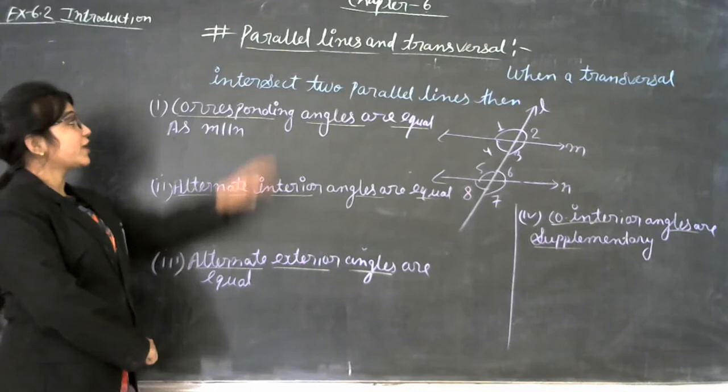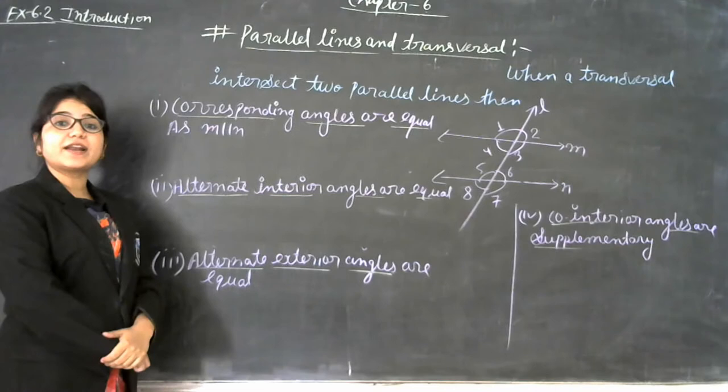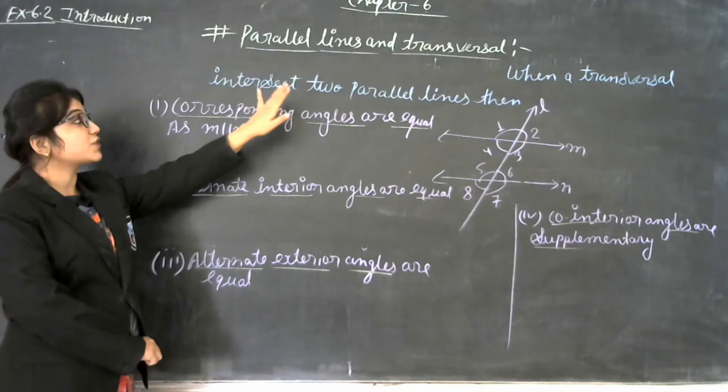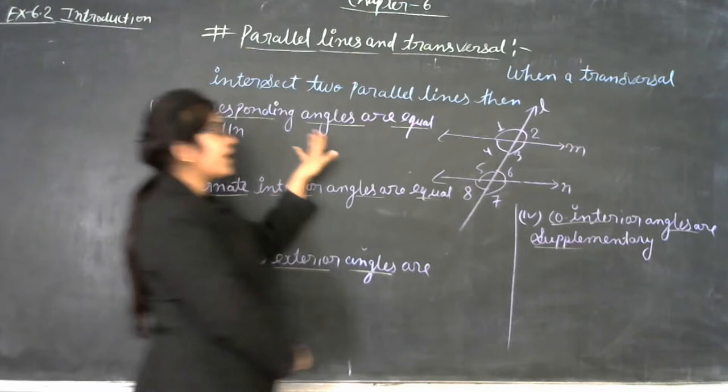The next topic is parallel lines and transversal. A parallel line means two lines that do not intersect each other — that is what a parallel line is. If a transversal intersects a parallel line, then we get certain angle relationships.